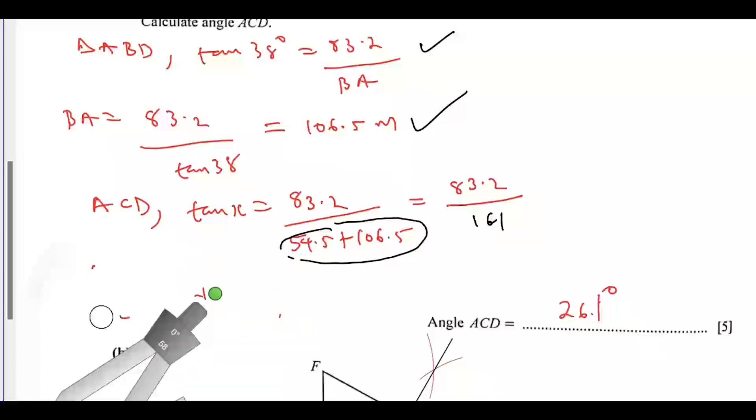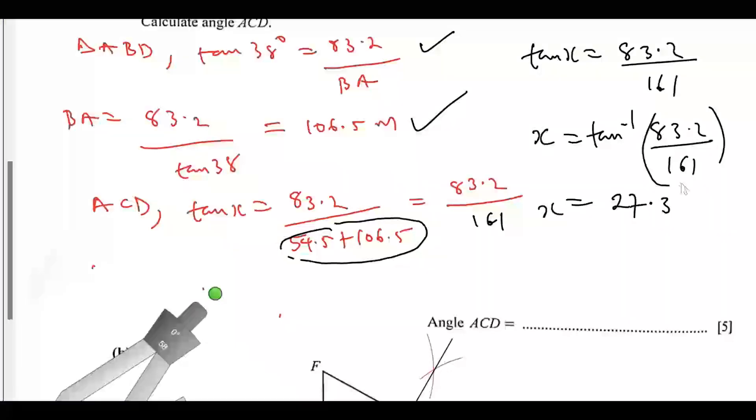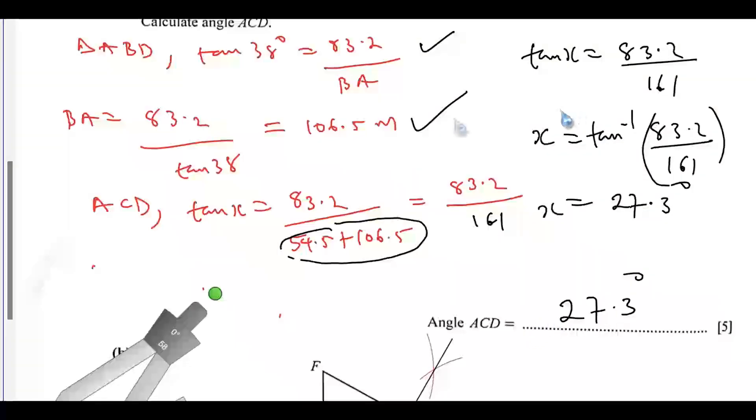From there, this is incorrect. From here, we can see that tan x equals 83.2 over 161. Then take tan inverse of both sides. X will be equals to tan inverse of 83.2 over 161. If you input this into your calculator, you should get x to be equals to 27.3 degrees. That is the value of angle ACD. Let's go to the next one.